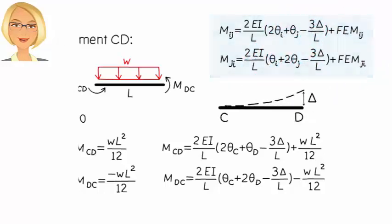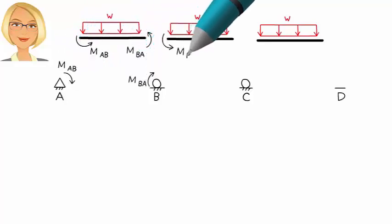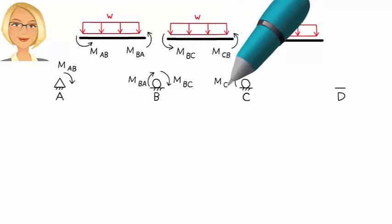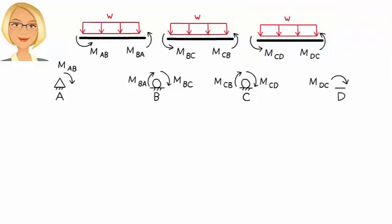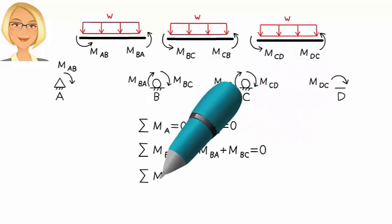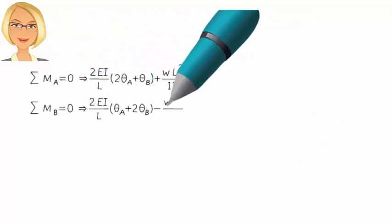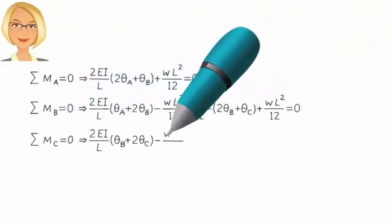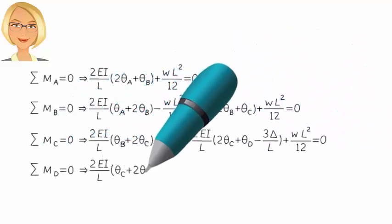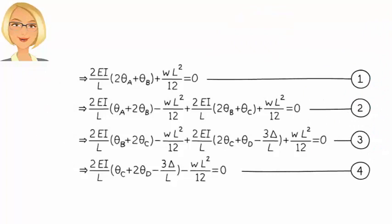Now let's place the balancing moments at the joints, like this. And write the joint equilibrium equations, like this. When we expand these equations, we get the four equations shown. Here we have four equations and five unknowns. Now we need to come up with one more equation.